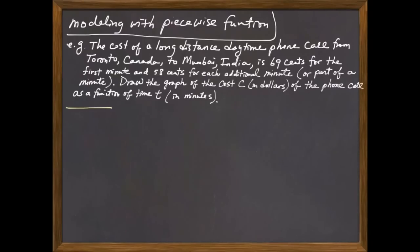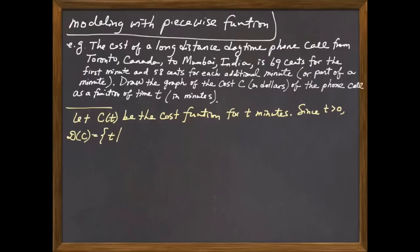Draw the graph of the cost function c in dollars of the phone call as a function of time t in minutes. As a rule of thumb, before we start graphing, we should figure out the domain for the function that is in question here. If we let c of t be the cost for t minutes, then because t is greater than 0, the domain for the cost function is a set of all t values such that t is greater than 0. That means we can only use positive t values to construct points for the graph. Well, let's just hypothetically think about what possible values we're looking at here. Start with, say, one minute. How much do you pay? Well, if it's within the first minute, that means we pay 69 cents. And remember, you're going to graph in terms of dollars. So we're going to convert it to $0.69.